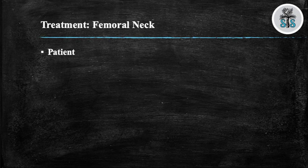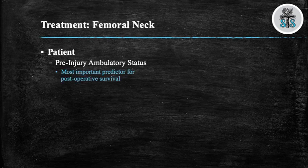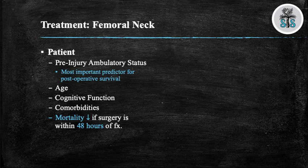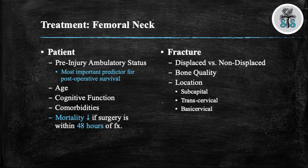There are many factors to take into account when treating these fractures. The most important predictor of post-operative survival is the patient's pre-injury ambulatory status — whether they are a community ambulator or a household ambulator using a walker at baseline. You need to consider the patient's age, cognitive function, dementia, and other comorbidities. Studies show mortality rate decreases if surgery is performed within 48 hours, but the patient needs to be medically optimized first. Pre-operatively, consider whether the fracture is displaced or non-displaced, bone quality, and fracture location.